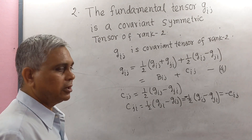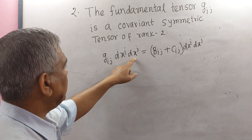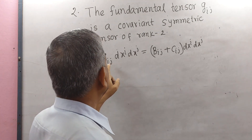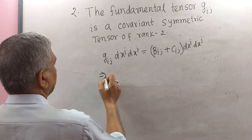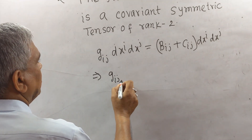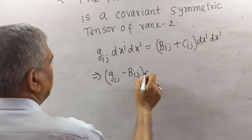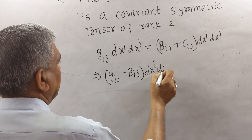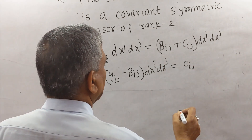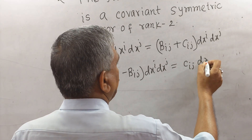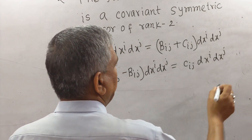Now we write g_IJ · dxI · dxJ and replace g_IJ with (B_IJ + C_IJ) · dxI · dxJ. This implies: (g_IJ − B_IJ) · dxI · dxJ = C_IJ · dxI · dxJ. This is equation number 5.